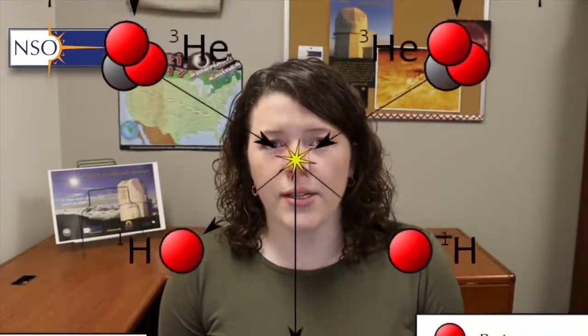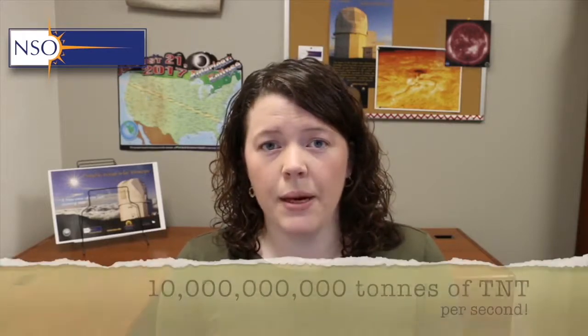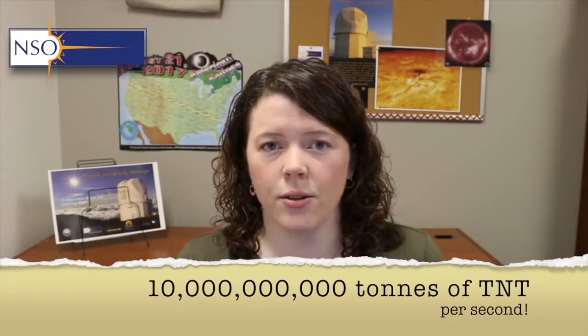The core is powered by nuclear fusion — this is where the Sun's energy originates. Nuclear fusion involves taking two hydrogen atoms and pushing them together to form helium. This process results in a huge amount of excess energy, equivalent to about 10 billion megatons of TNT produced in the core every second.